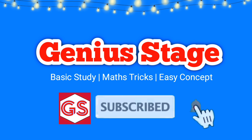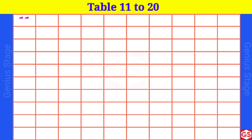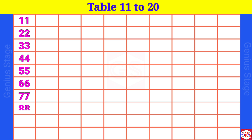Welcome to Genius Stage. Table 11 to 20. 11 1s are 11, 11 2s are 22, 11 3s are 33, 11 4s are 44, 11 5s are 55, 11 6s are 66, 11 7s are 77, 11 8s are 88, 11 9s are 99.